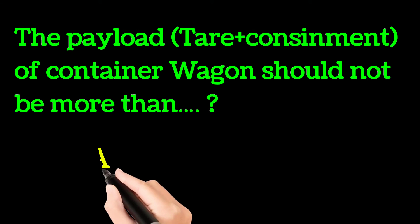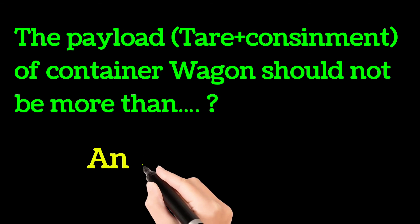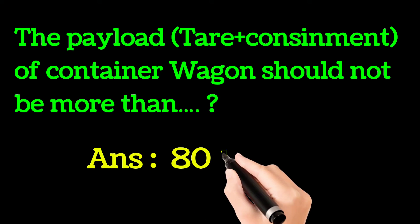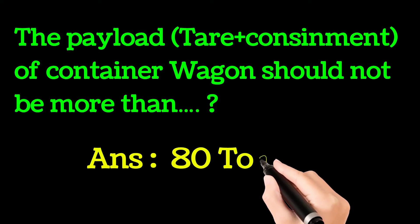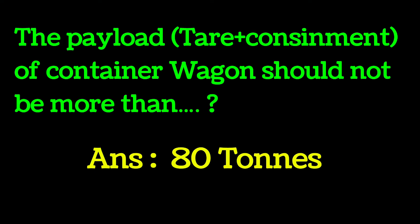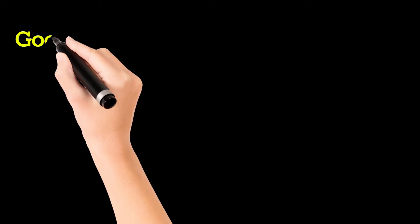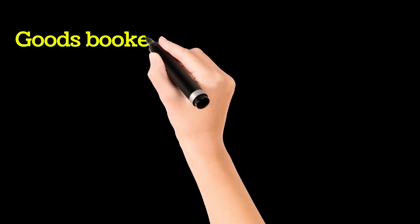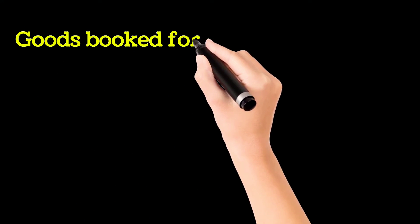Next important question: the payload — meaning tare plus consignment of container wagons — should not be more than how much? The correct answer is 80 tons.